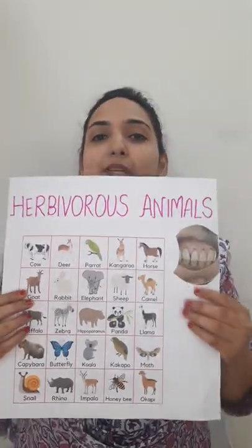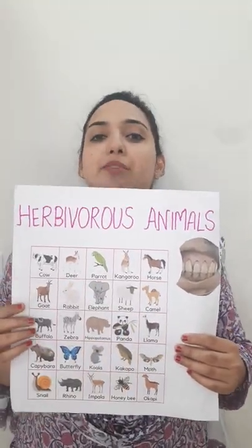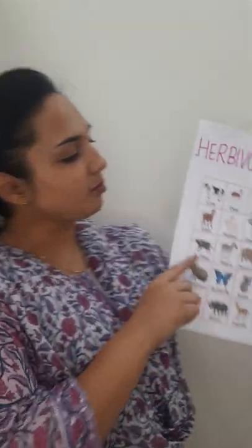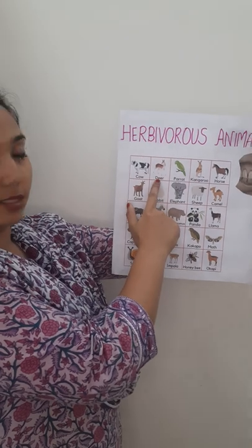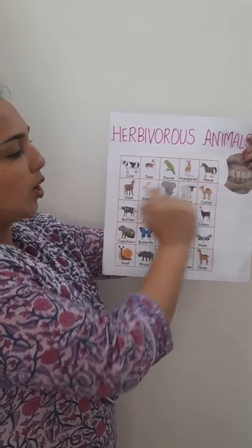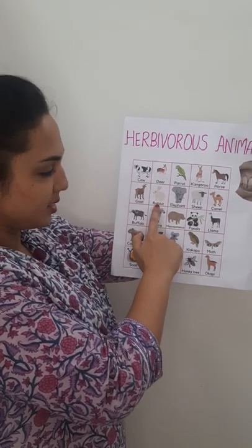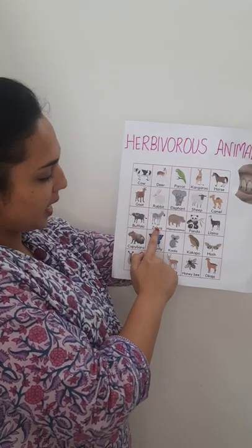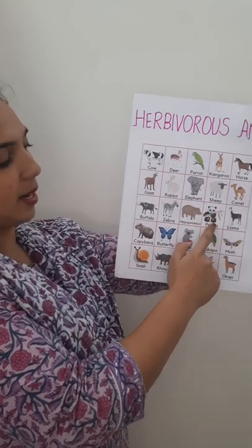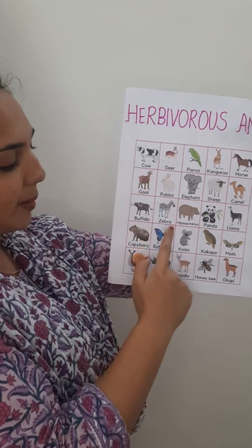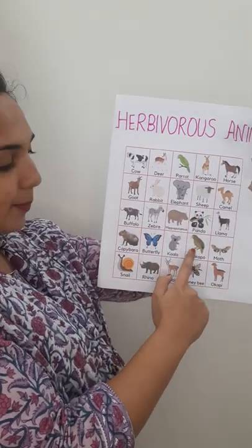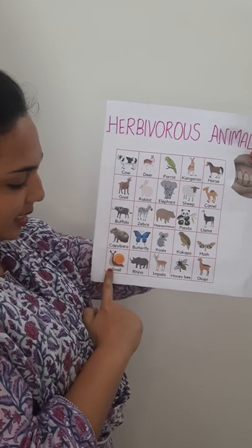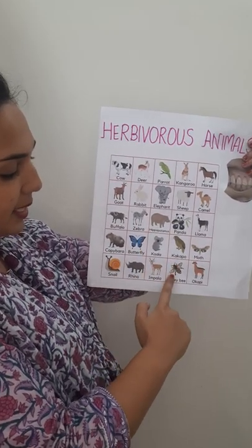To derive their nutrition and energy. Let's have a look at the herbivorous animal chart. I will read aloud all these animals one by one for you — please look carefully: cow, deer, parrot, kangaroo, horse, goat, rabbit, elephant, camel, buffalo, zebra, hippopotamus, panda, llama, capybara, butterfly, koala, kakapo, moth, snail, rhino, impala, honeybee, and okapi.